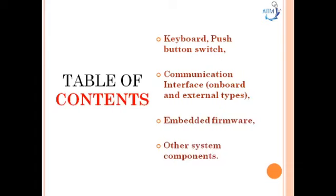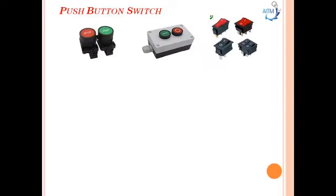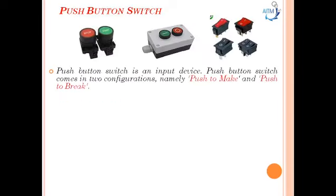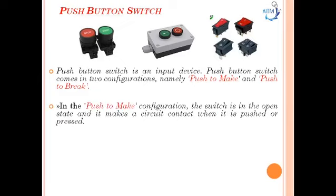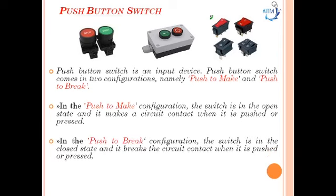First, we'll cover the push-button switch, which is an input device that comes in two configurations: push-to-make and push-to-break. In push-to-make, the switch is in the open state and makes a circuit contact when pressed, allowing electricity to flow between its two contacts. Examples include doorbell and calculator buttons.